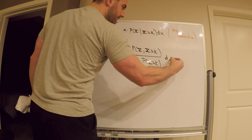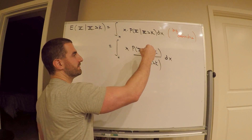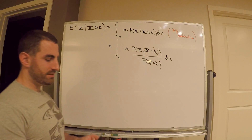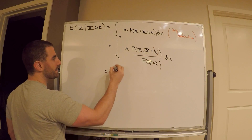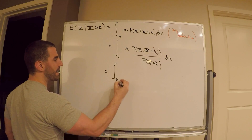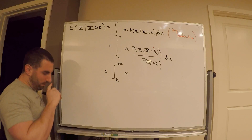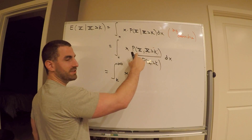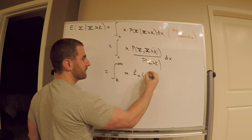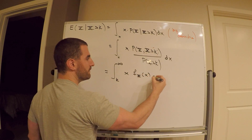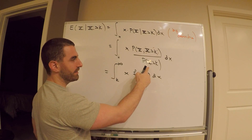Let's write one other step. Let's deal with this condition. What does this condition say? This says condition that x is greater than k. So this is equal to the integral from k to whatever x. We've conditioned that x greater than k. What do I want? I want just a probability density function times the probability density function, dx divided by probability x greater than k.